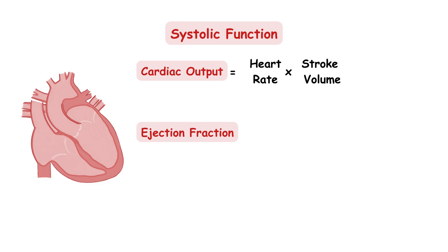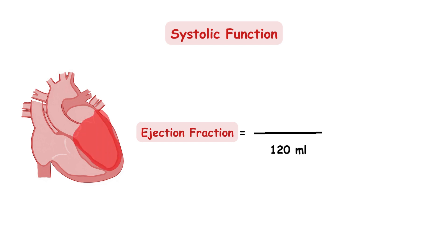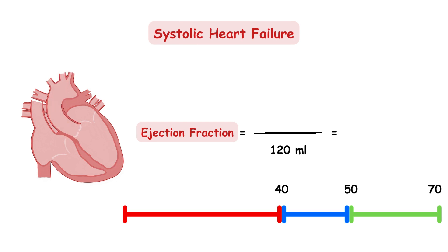Ventricular ejection fraction is the volume of blood pumped out of the heart during systole — the stroke volume — relative to the total volume of blood the ventricle received during diastole, which is the end-diastolic volume. Normally, the ventricle receives around 120 milliliters, and if it pumps out 70 milliliters, we get an ejection fraction of around 58%, which is within the normal range. In individuals with systolic dysfunction, the heart pumps less than 70 milliliters, leading to a reduced ejection fraction. For example, pumping around 48 milliliters gives an ejection fraction of 40%, and an ejection fraction of less than 40% means the patient has systolic heart failure.